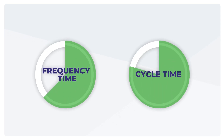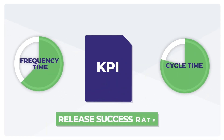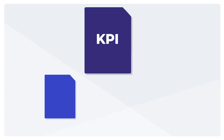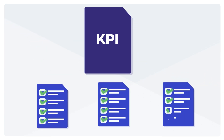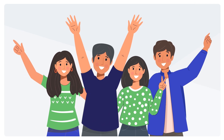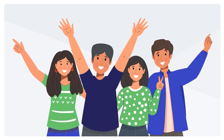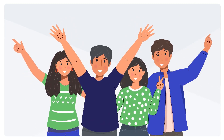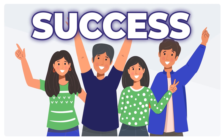While frequency and cycle time are proxies to gauge the efficiency of your process, your go-to KPI for understanding quality of delivery is the release success rate. It refers to the number of releases your team delivered that were free of any major defects and met requirements. Every team should have its own definition of done for a release to be called a success.